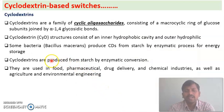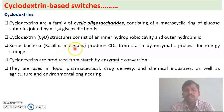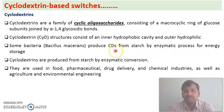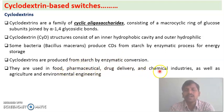Cyclodextrins are naturally produced by some bacteria — for example, Bacillus macerans produces cyclodextrins for energy storage through an enzymatic process. Synthetic cyclodextrins are produced from starch by enzymatic conversion. Cyclodextrins are extensively used in food, pharmaceutical, drug delivery, chemical industries, and also in agricultural and environmental engineering.